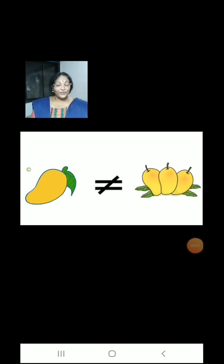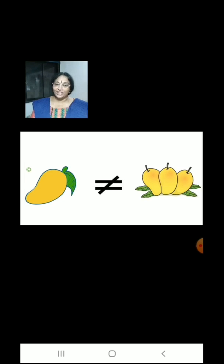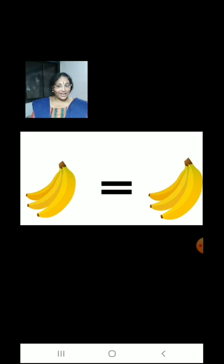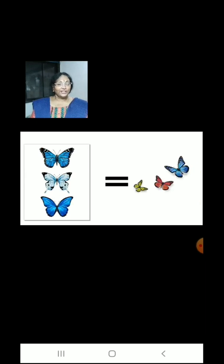Children, we have 1 mango on the left hand side and 3 mangoes on the right hand side. We have 3 butterflies on the left hand side and 3 butterflies on the right hand side, which means 3 is equal to 3.